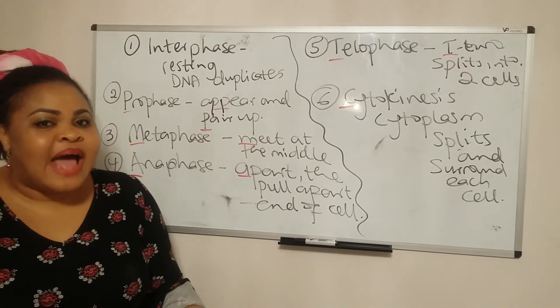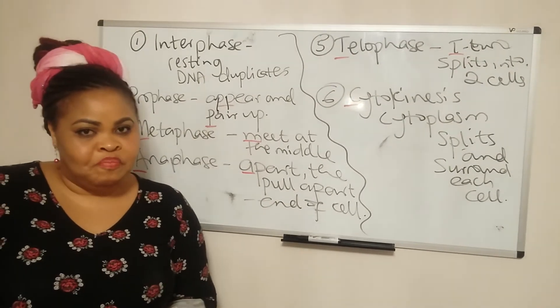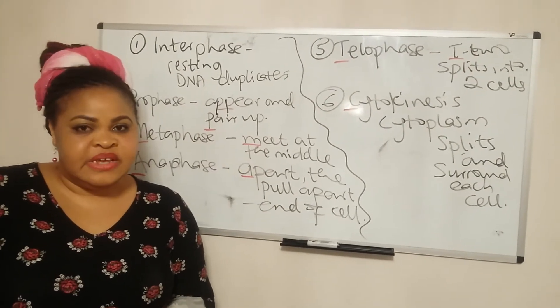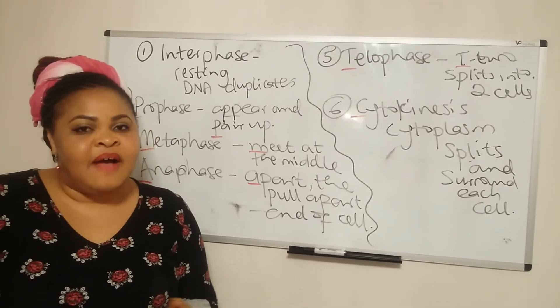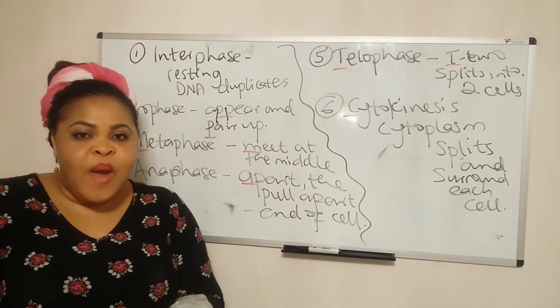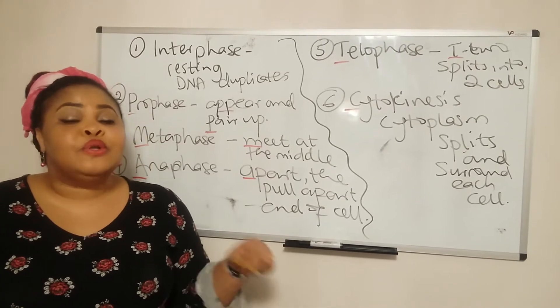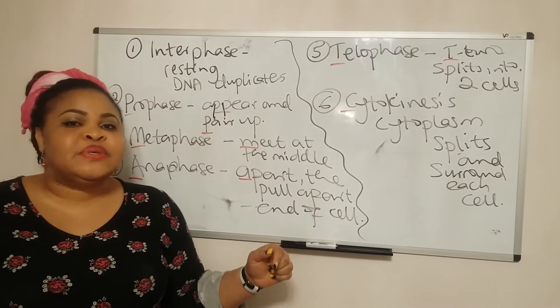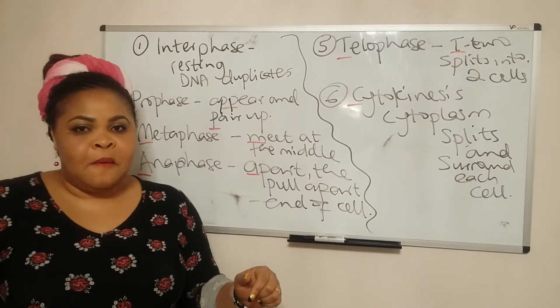And then after that, they line up in the middle. Metaphase — meet in the middle. And then after that is the anaphase where they pull apart to the opposite end of the cell.